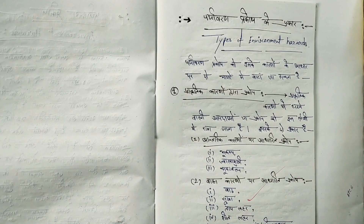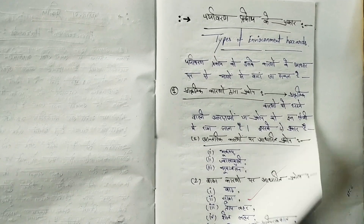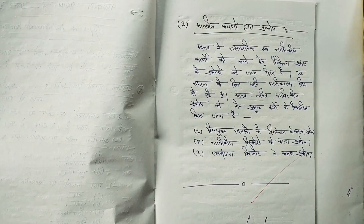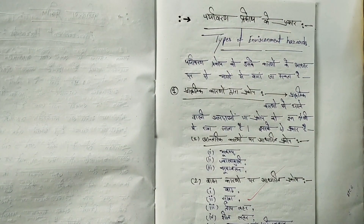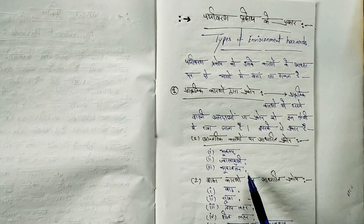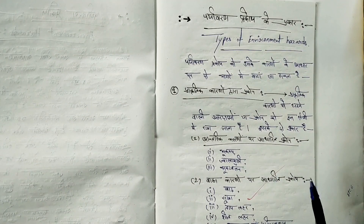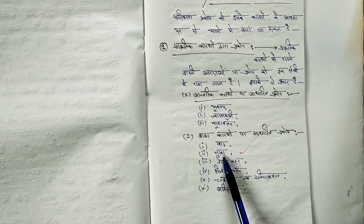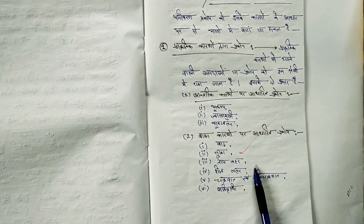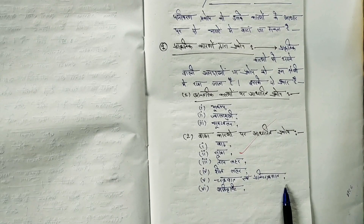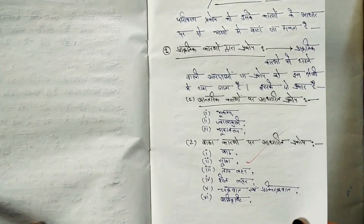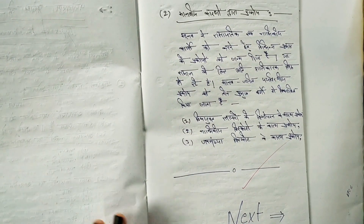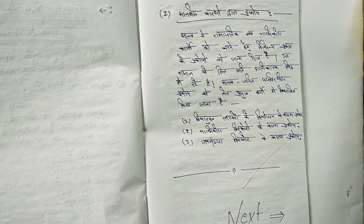Types of environmental hazards — prakop ke prakar. It can be divided into two categories: first, prakartik kaarnon dvara prakop (natural hazards); second, maanviya kaarnon dvara prakop (man-made hazards). Natural hazards include: antrik — bhoukamp (earthquake), jwalamukhi (volcano), bhuskhalan (landslide); and bhaujik — baarh (flood), sukha (drought), taap leher (heatwave), sheet leher (cold wave), chakravat (cyclone), prati-chakravat, and ati varsha (heavy rainfall).